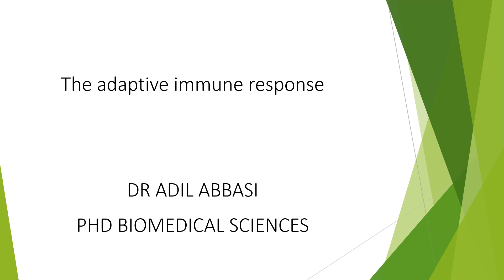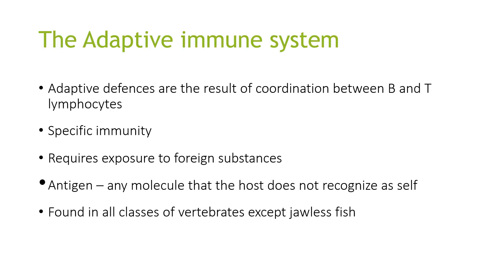Good afternoon. Today we are looking at the adaptive immune response part of the immune system. Adaptive defenses are the result of coordination between B and T lymphocytes. It is a specific immunity and requires exposure to foreign substances. One key definition to cover first is an antigen — any molecule that is not recognised as self. The adaptive immune response is found in all classes of vertebrates except the jawless fish.